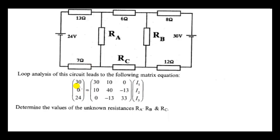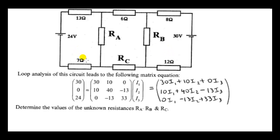Here we have a matrix equation connecting the voltage sources in this circuit to the three currents I1, I2, and I3 flowing in the three loops of this circuit. We can multiply out the right-hand side. We take the first row and multiply by the column to get the entry of our 3-by-1 matrix. This matrix has three rows but only one column.